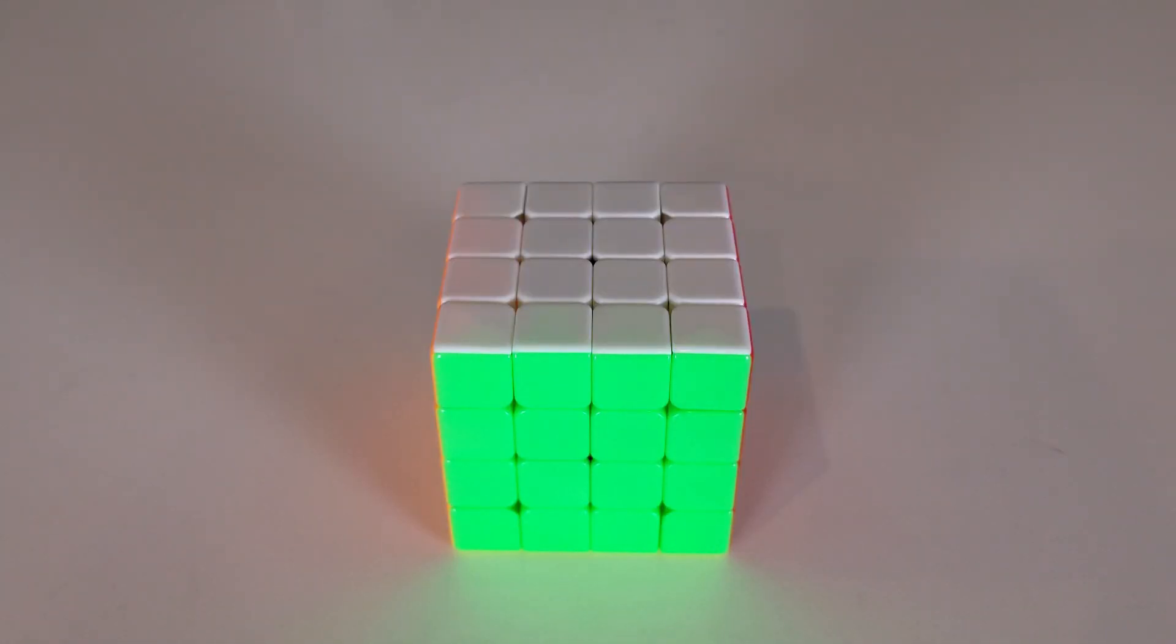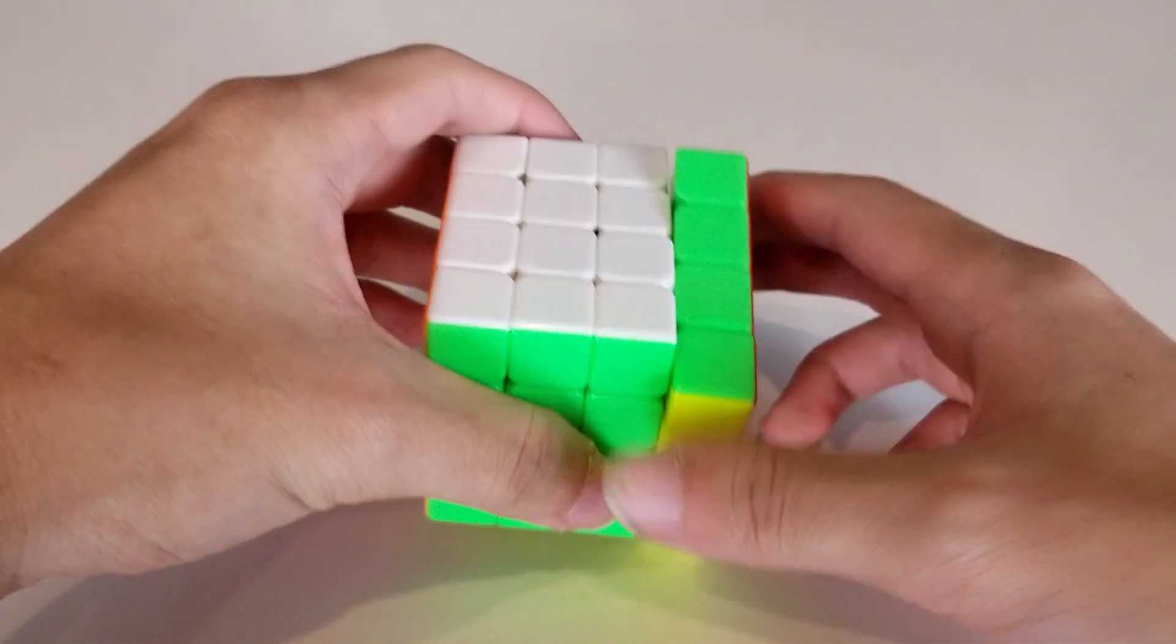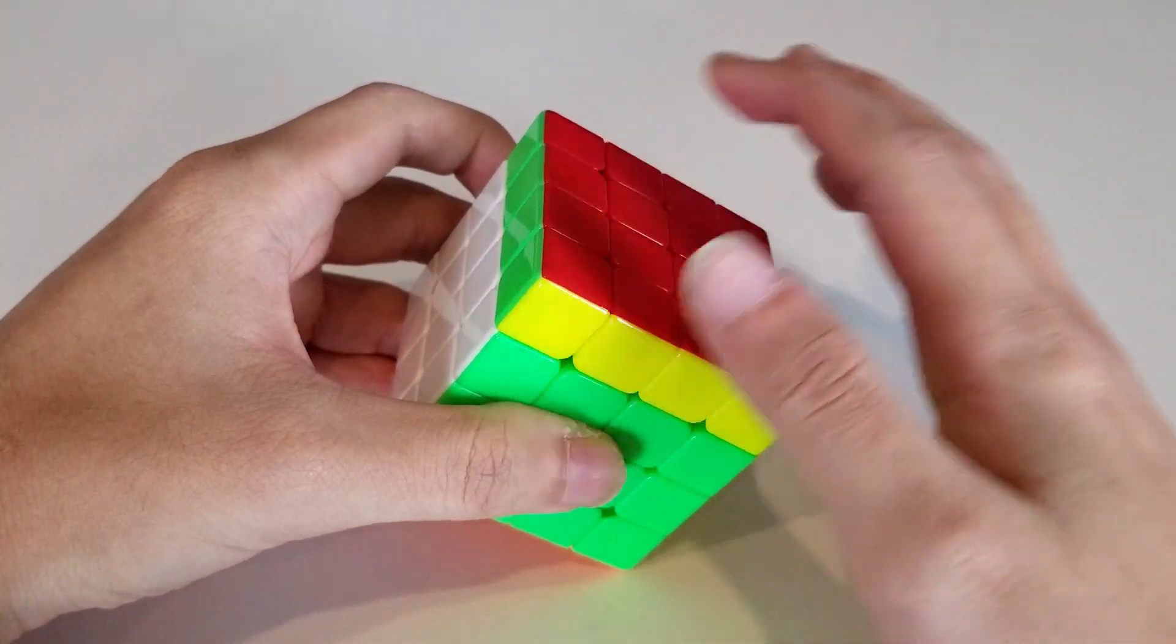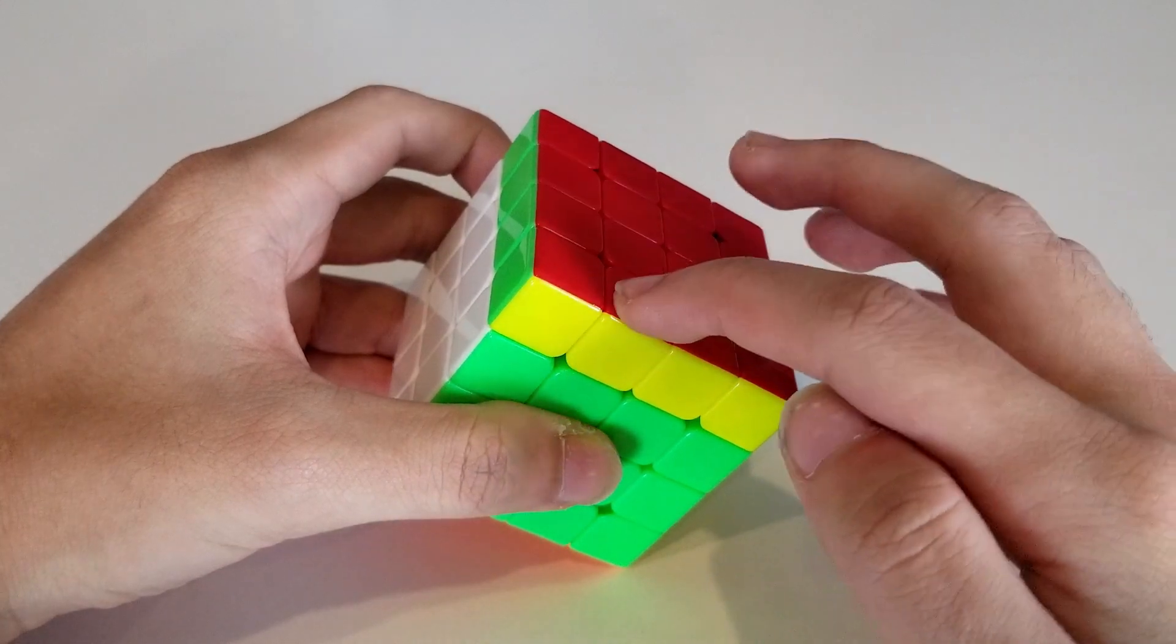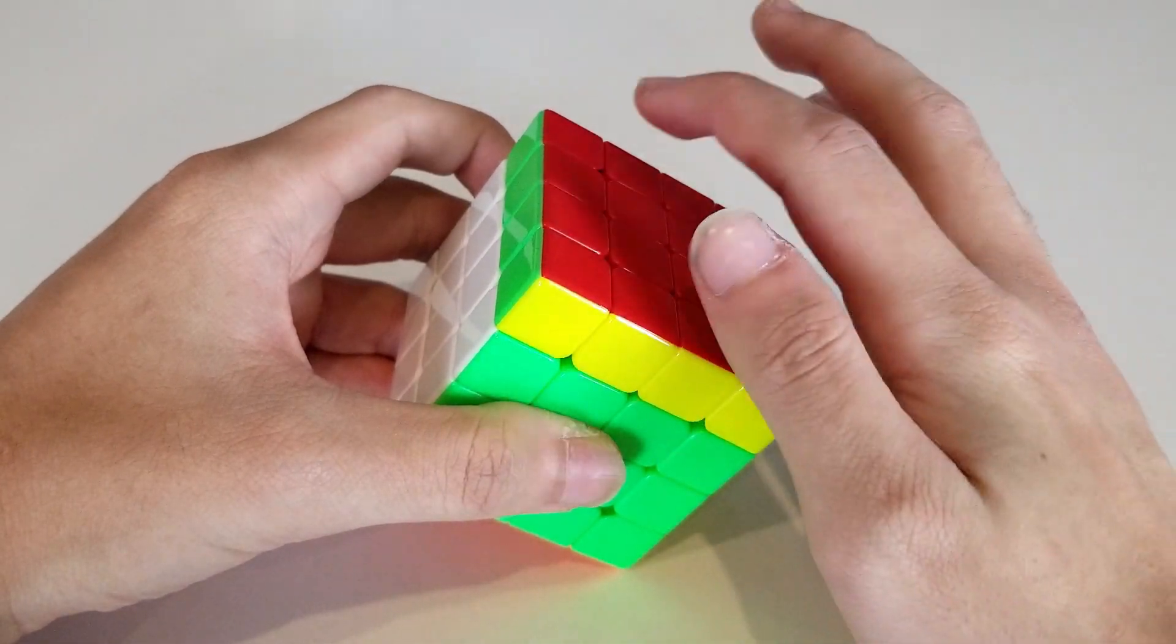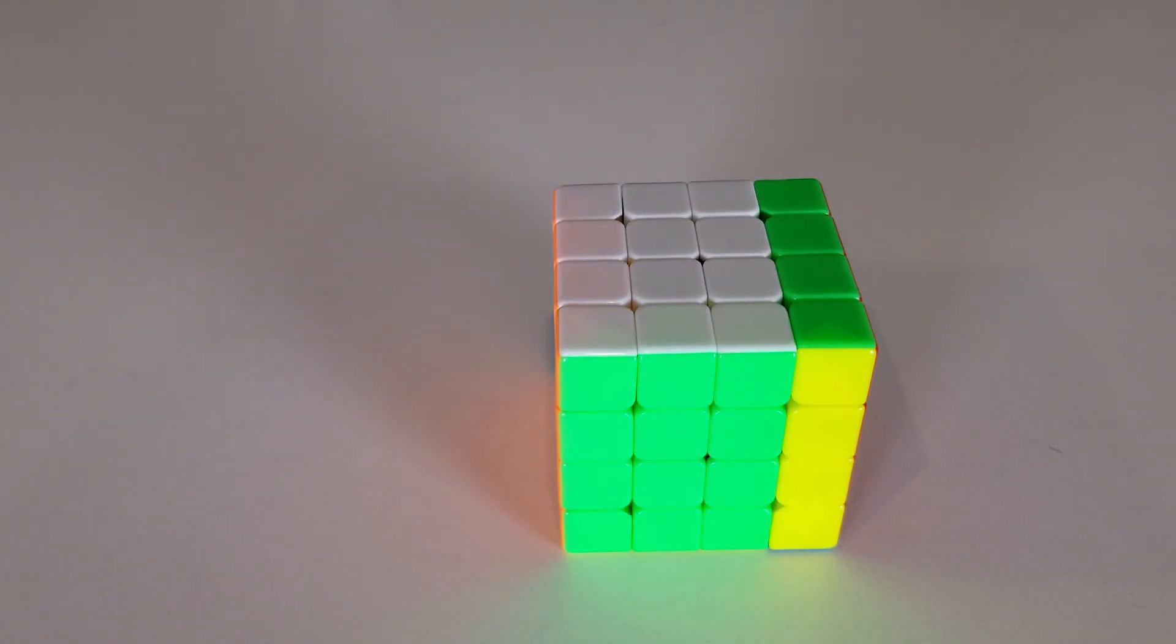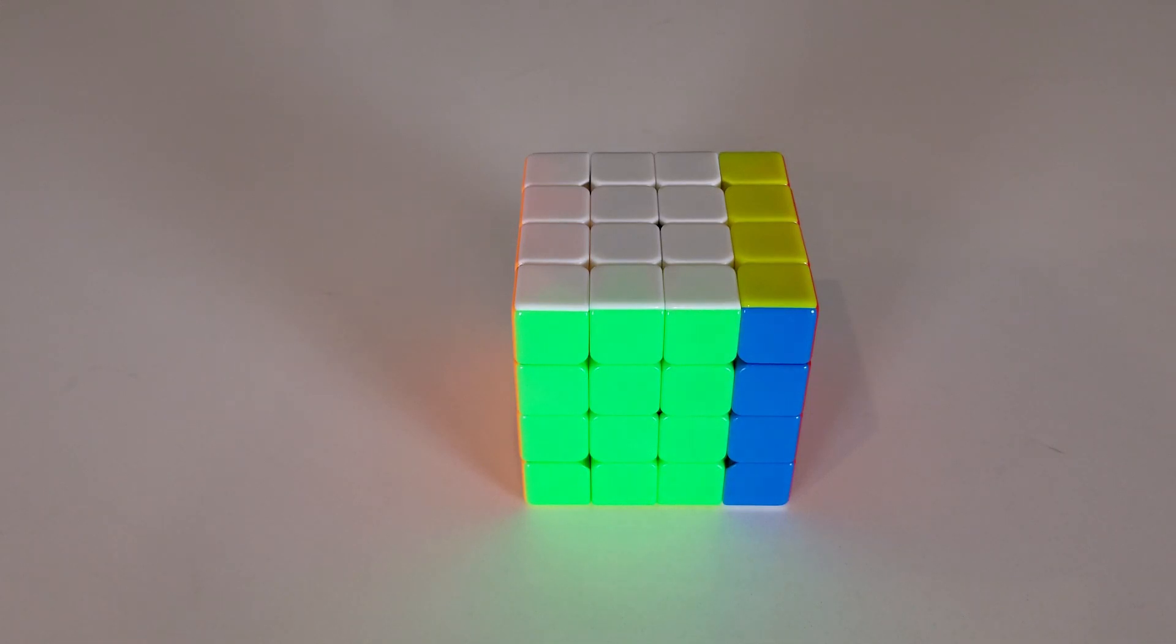Now, let's look at an outer turn, such as an R. We can see that the wings have done one 4-cycle, here to here to here to here, as well as a second 4-cycle with these wings. This pair of 4-cycles, they again cancel each other out with respect to parity, so a quarter turn of the outer layer preserves parity. A half turn of the outer layer can be trivially shown to preserve parity, because you can view this as two quarter turns.